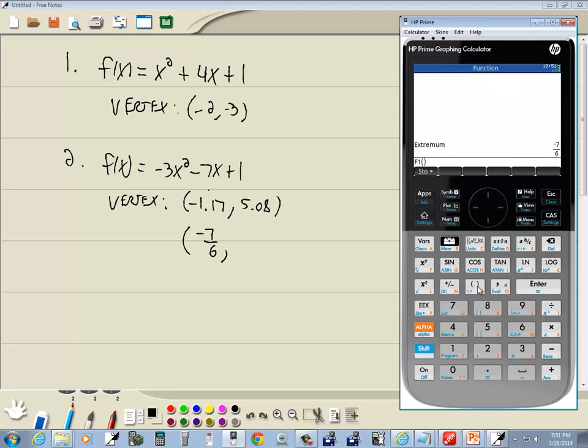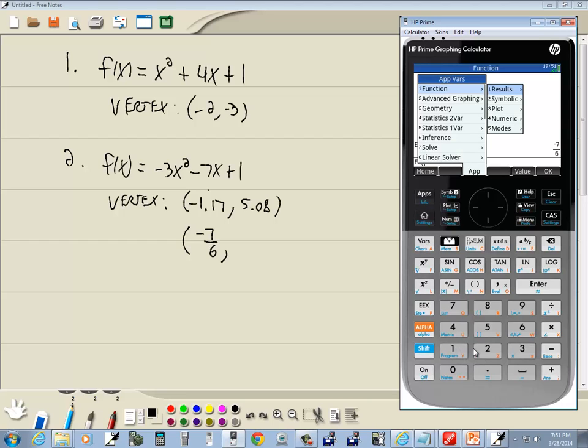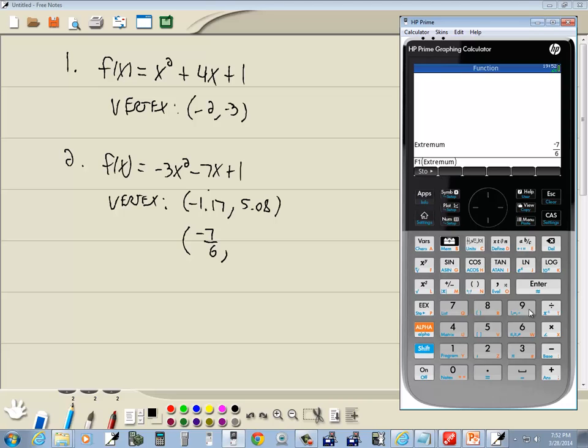Put in parentheses, and now I want to put in my extremum. Now I could just type in -7/6 directly, or I could go back to vars, 1 for function, 1 for results, 1 for extremum, and then press enter. That's just evaluating a function. We would plug -7/6 into our function, which is stored on F1. Now to change that to a fraction, we press our fraction button. And 61 over 12.